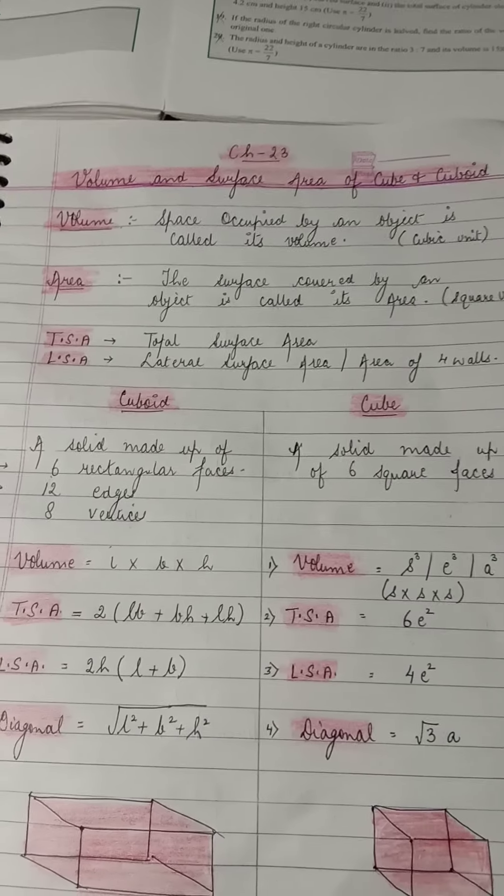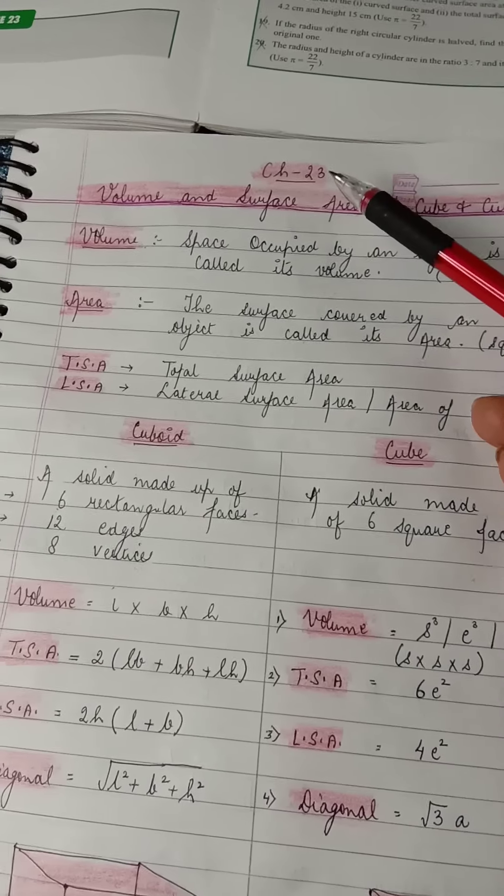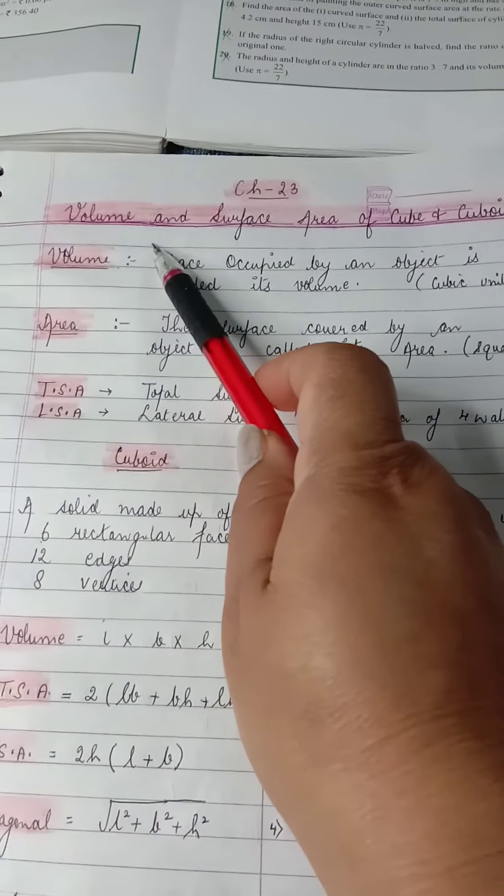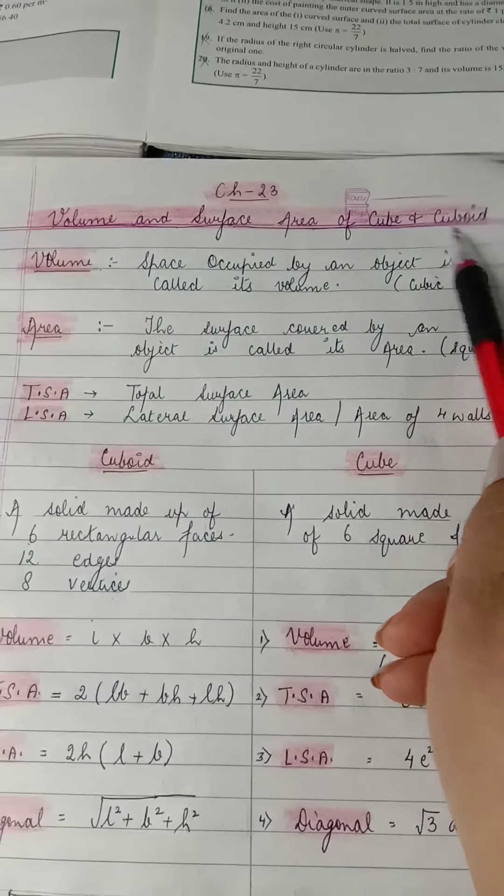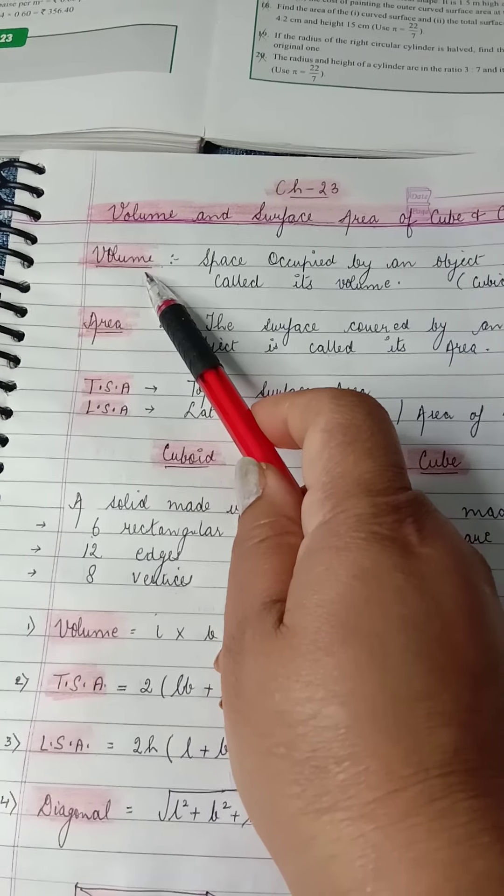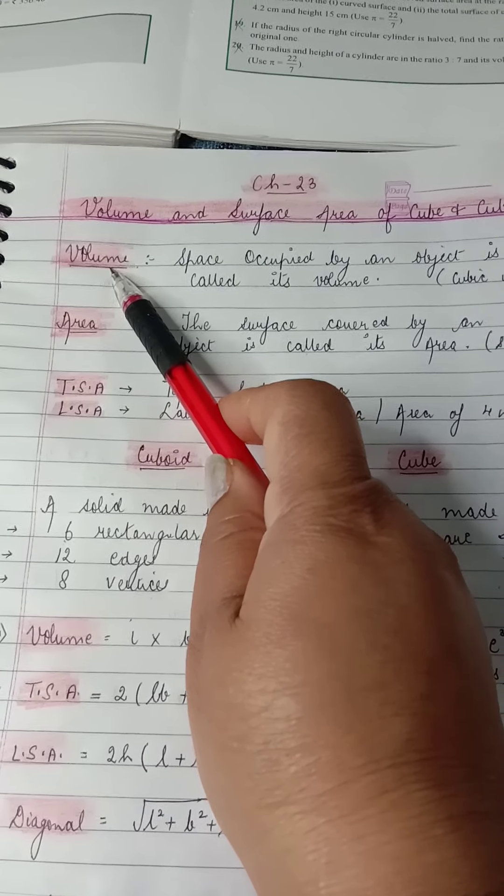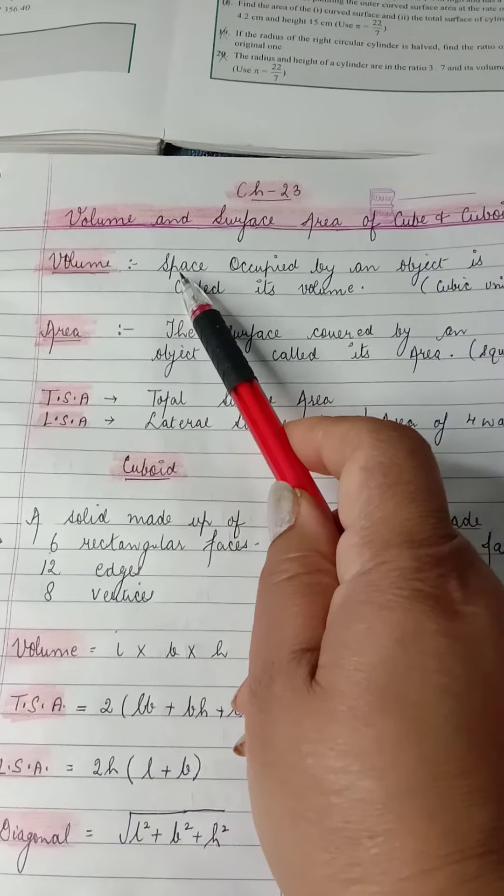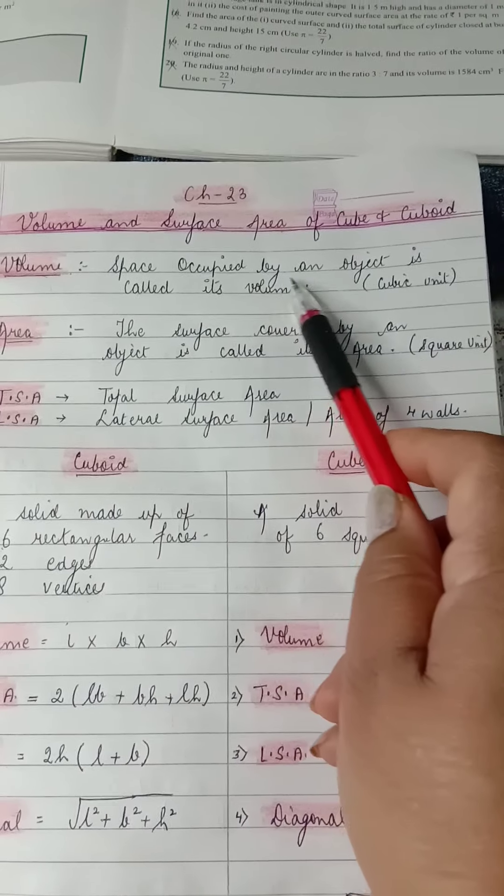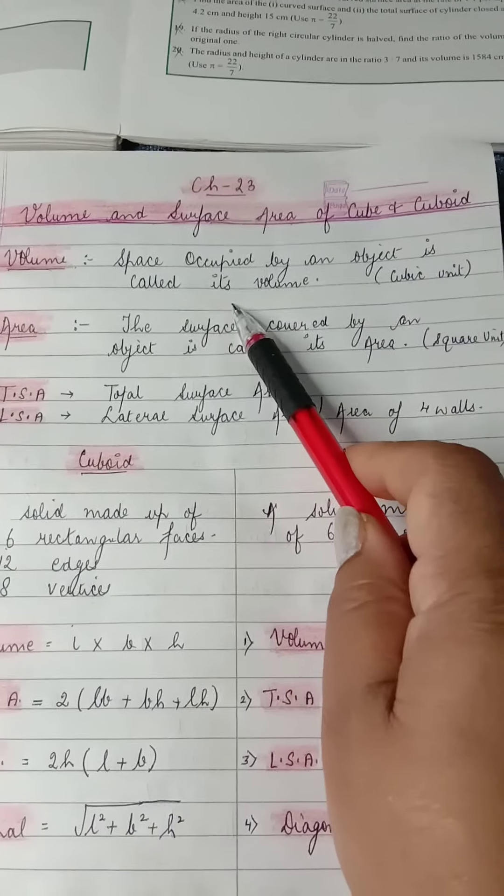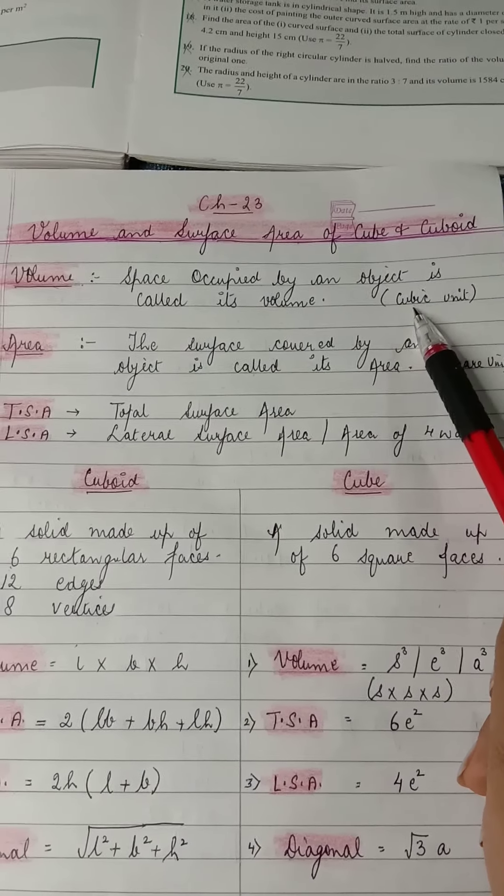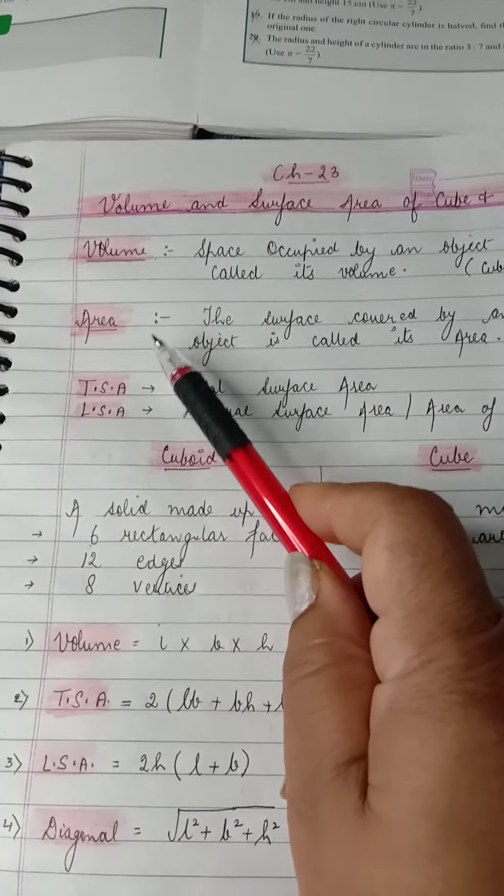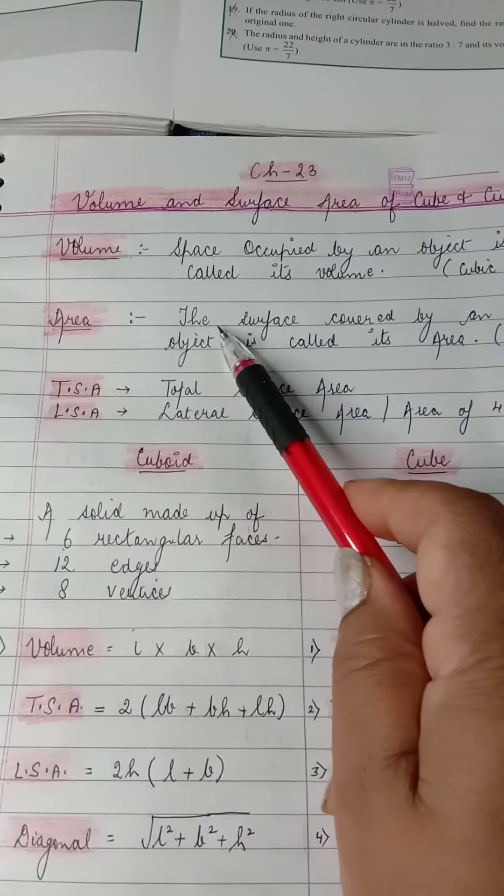Hello children, welcome to second term. We'll start with chapter number 23, volume and surface area of cube and cuboid. Let's talk about the terms used in the chapter. First of all, what is volume? Volume is the space occupied by an object, called its volume. The unit of volume is cubic unit.